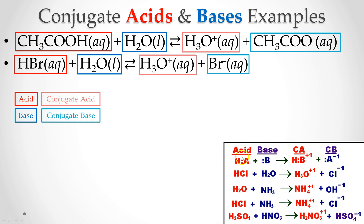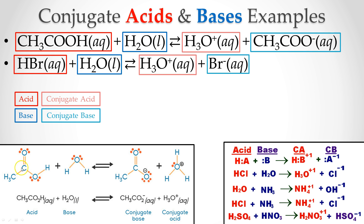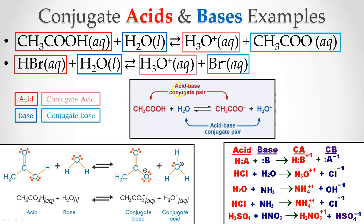Acids and bases always work this way: what's left after the acid donates is the conjugate base, and what's left after the base accepts the proton is the conjugate acid. You can see more examples here — acid plus water gives a conjugate base and a conjugate acid. The conjugate acid has lost that proton and given it to what is now the conjugate acid, which is now ready to donate it back.